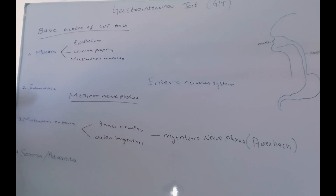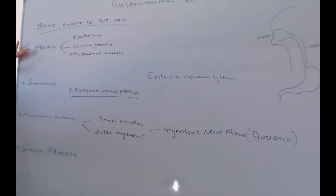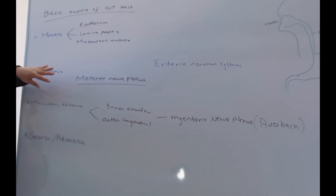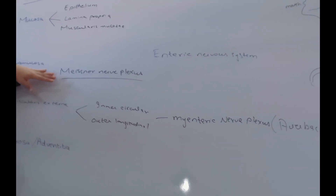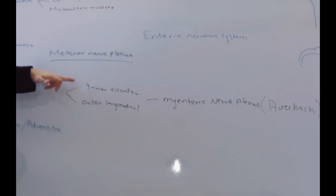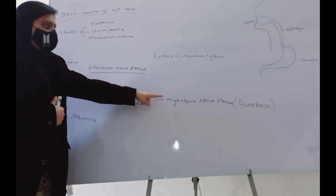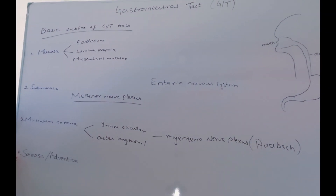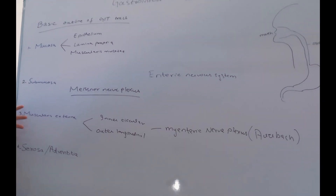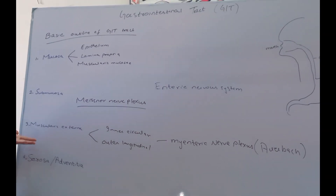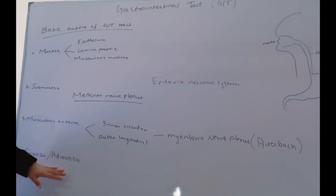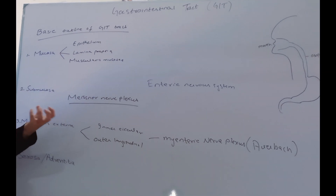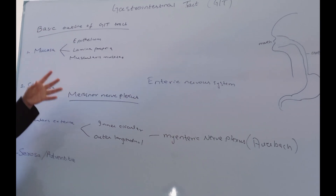So this was the basic outline of the GIT tract. To summarize: mucosa, submucosa, muscularis externa, and serosa or adventitia. Mucosa contains three layers: epithelium, lamina propria, and muscularis mucosa — just a single layer of muscle. Submucosa is a connective tissue layer with blood vessels and the Meissner's nerve plexus. Then we have the muscularis externa with inner circular and outer longitudinal muscle layers, and between these two layers you will find the Myenteric (Auerbach's) nerve plexus. These two plexuses constitute the enteric nervous system of the GIT. The last layer is serosa or adventitia. We will also discuss all the detailed structures of the GIT one by one in further lectures. Thank you.